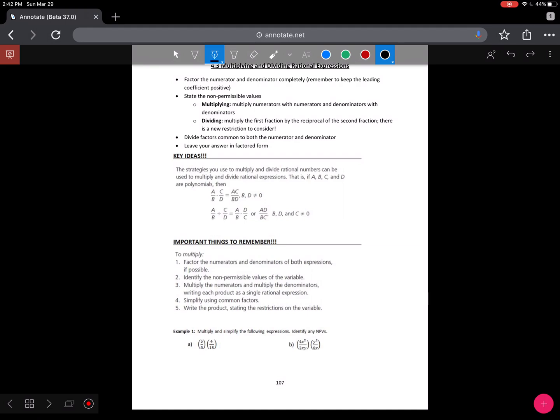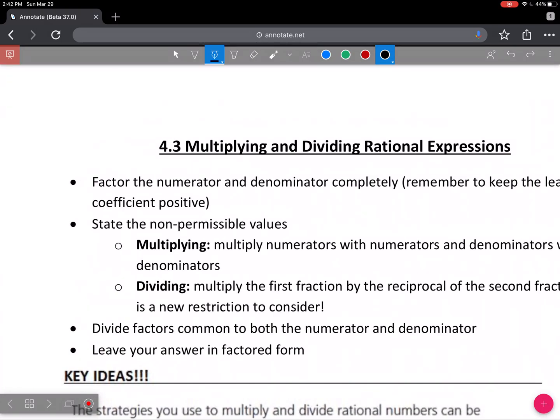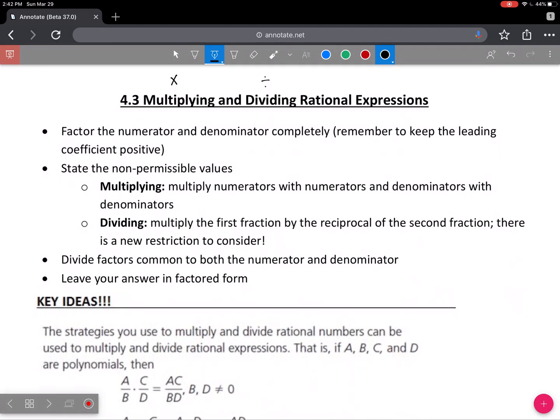We've been simplifying rational expressions, and now we're going to introduce two operations, multiplication and division. It's just like when you're multiplying and dividing fractions for regular numbers. You're going to have the same rules applying. Remember that factoring is a key process. Remember to keep the lead coefficient positive. That's the old negative trick. And don't forget to state the non-permissible values. Now, when you're multiplying, there's no issues, but when you're dividing, after you reciprocate the second fraction, there could be a new restriction to consider. Not always, but sometimes there will be. I'll put a star beside that situation when it comes up.